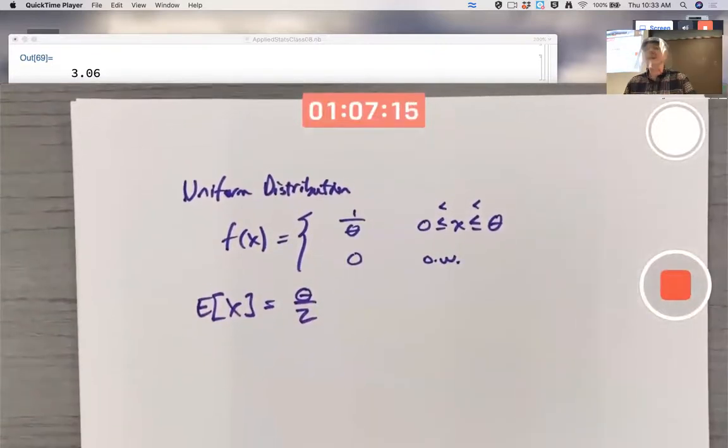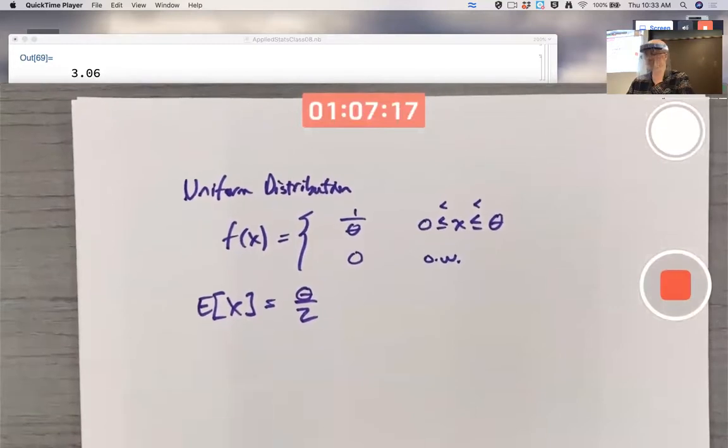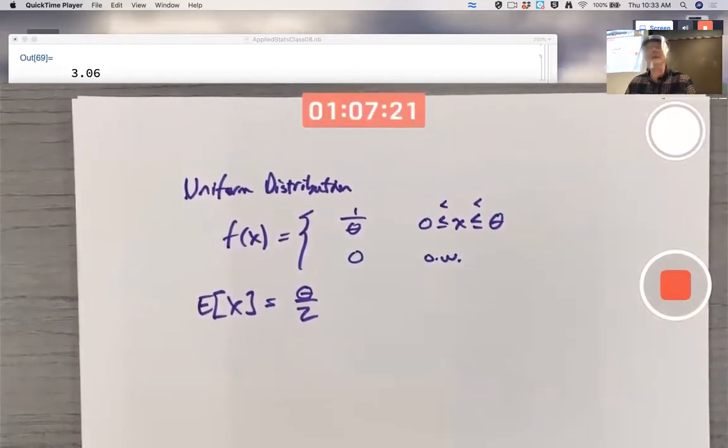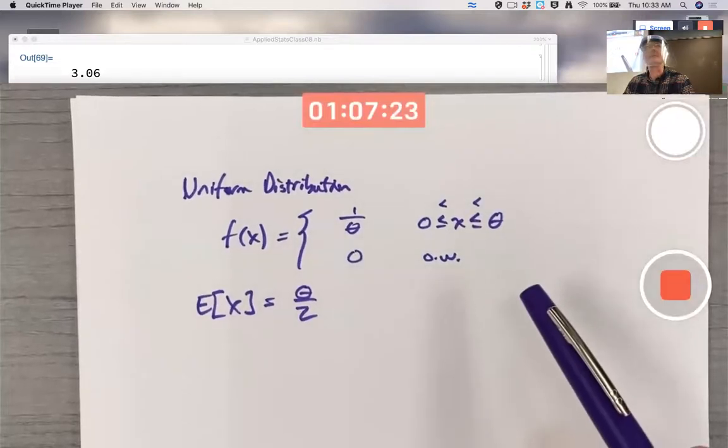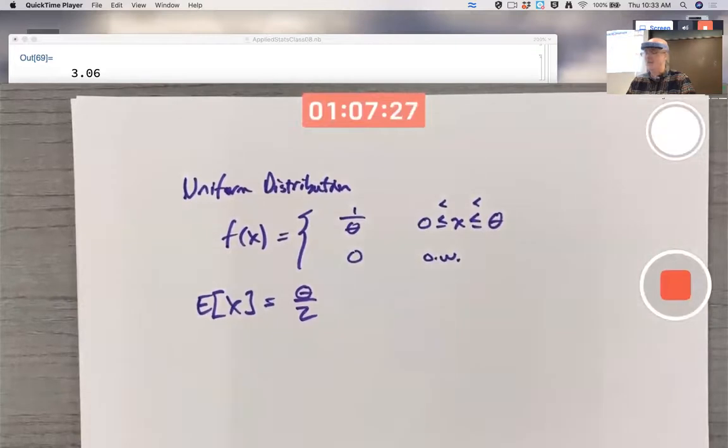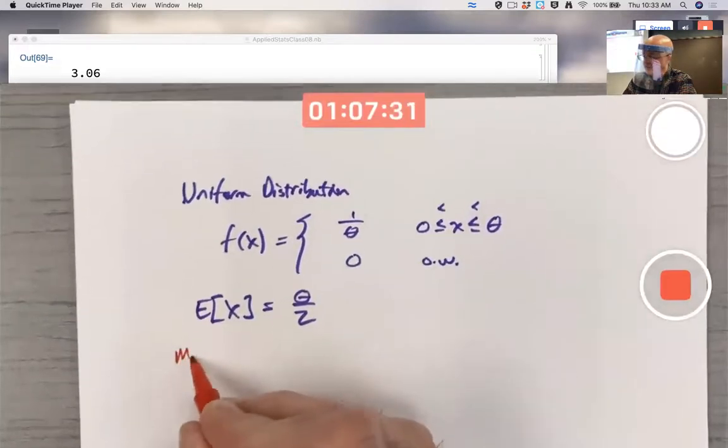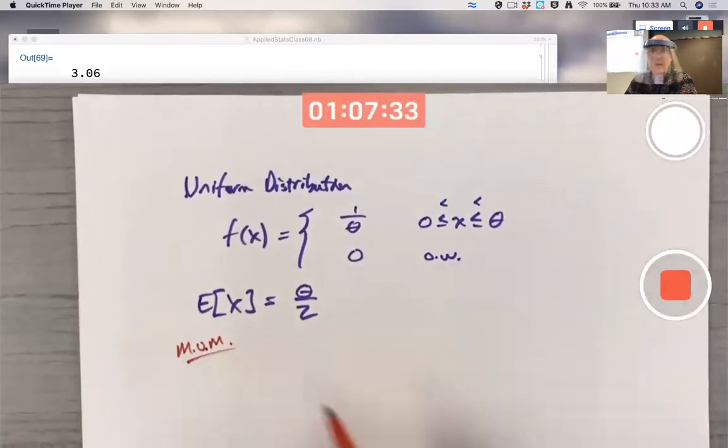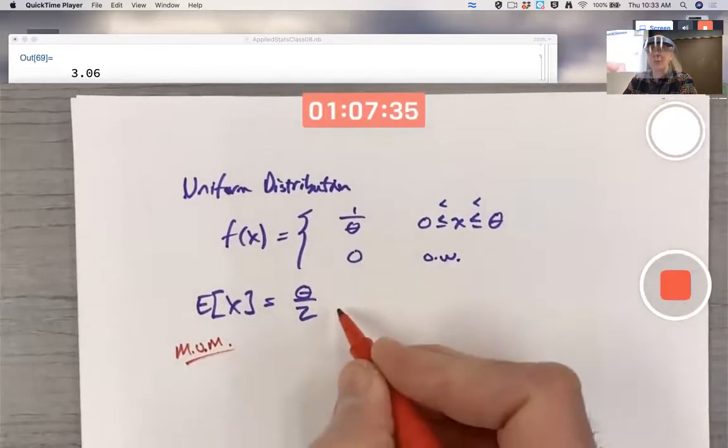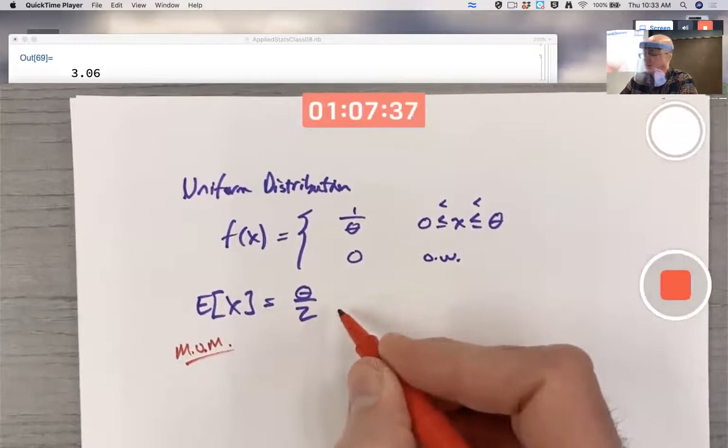What's my goal here in this last problem for class today? My goal is to come up with estimators for theta. Theta is the parameter. If I use the method of moments approach, I need to use the fact that this equation is true, and that makes good sense. Uniform distribution.